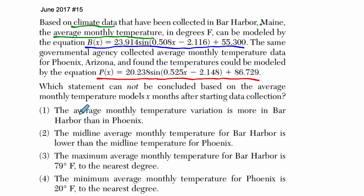The first part says the average monthly temperature variation is more in Bar Harbor than in Phoenix. How do we do that? Well, in each case, we're going to take the midline. That's this number right here. It's the vertical shift, how much we're pushing the sine wave up or down.